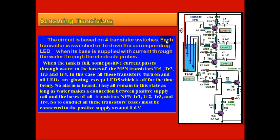This is the main part of the water level indicator. The circuit is based on four transistor switches. Each transistor is switched on to drive the corresponding LED when its base is supplied with current through the water, through electrode probes.